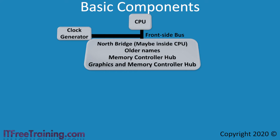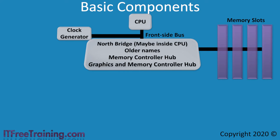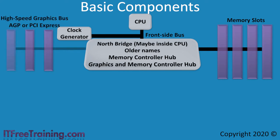The CPU requires data in order to operate, and thus the memory slots can be connected to the North Bridge or directly to the CPU. Nowadays the video card is also a high speed device and may be connected directly to the CPU. Newer motherboards will use PCI Express for the video card while older motherboards will use an AGP slot.